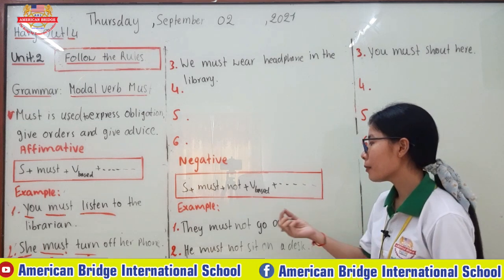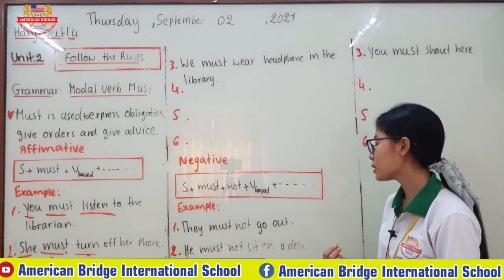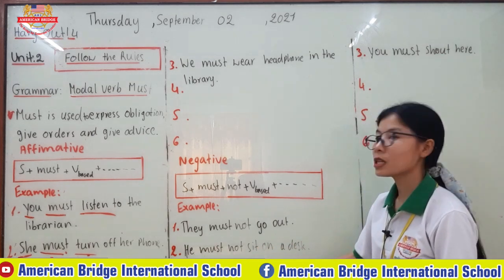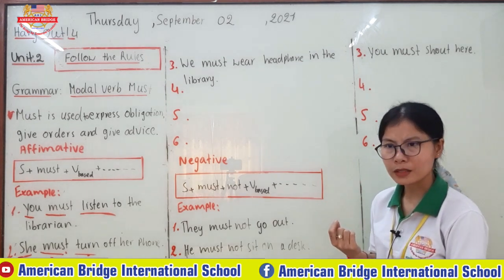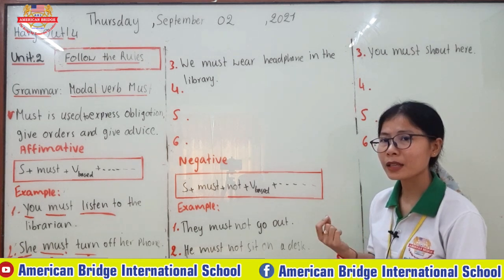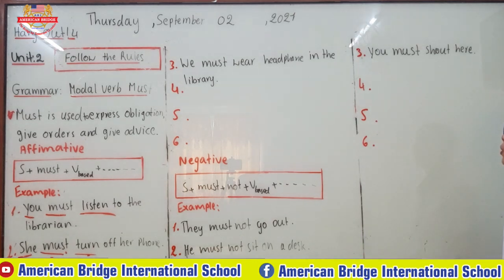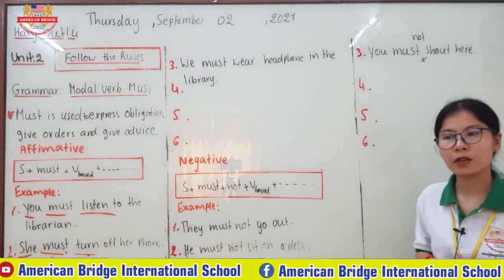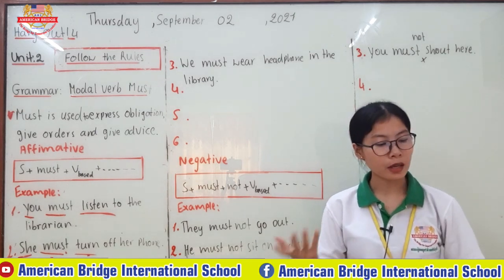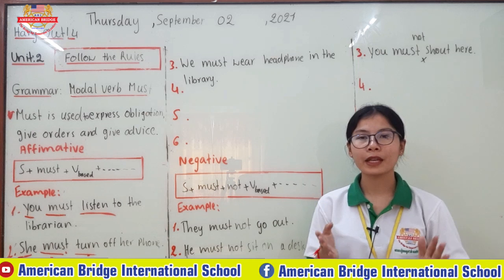You write 'must not' — it is the long form. For example: 'He must not sit on a desk.' This is about giving someone advice — if you see it as a mistake, you can advise him with 'he must not sit on a desk.' Number three: 'You must not shout here' — because it is not allowed to shout in the library or during a lesson session.